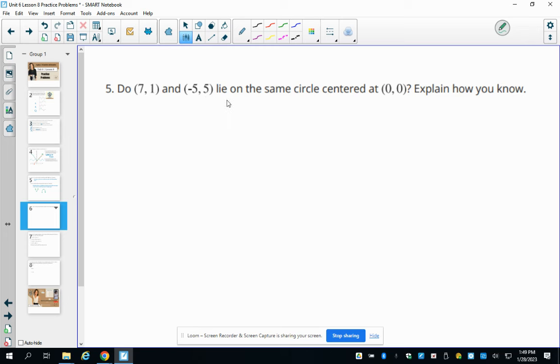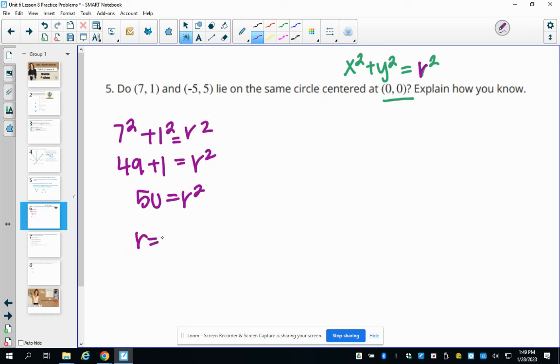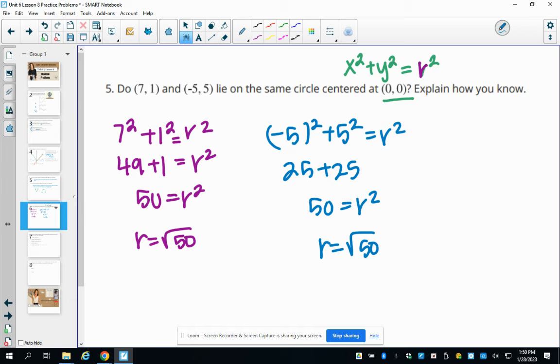Number five, do the points 7, 1, and negative 5, 5 lie on the same circle centered at 0, 0? Explain how you know. So the equation for this function or for this circle would be x minus 0 squared plus y minus 0 squared. So as long as these two points have the same radius when we do x squared plus y squared, then they're going to be on the same circle. So we'll just look at 7 squared plus 1 squared. So that's 49 plus 1, which is 50. So this is going to be our r squared. So then the radius is going to be square root of 50 in this circle. And if we do this other one, and we do negative 5 squared plus 5 squared, so that's going to be 25 plus 25. And so then that's going to be 50 equals r squared. So again, we're going to get a radius of square root of 50. And so these are going to be on the same circle since they have the same radius, or they're the same distance away from 0, 0.